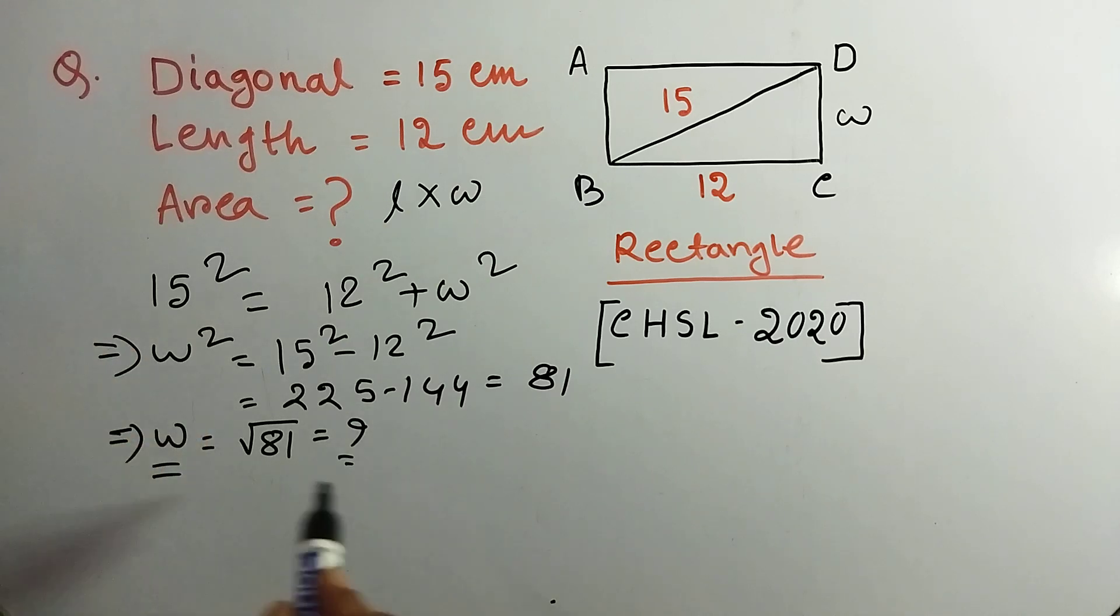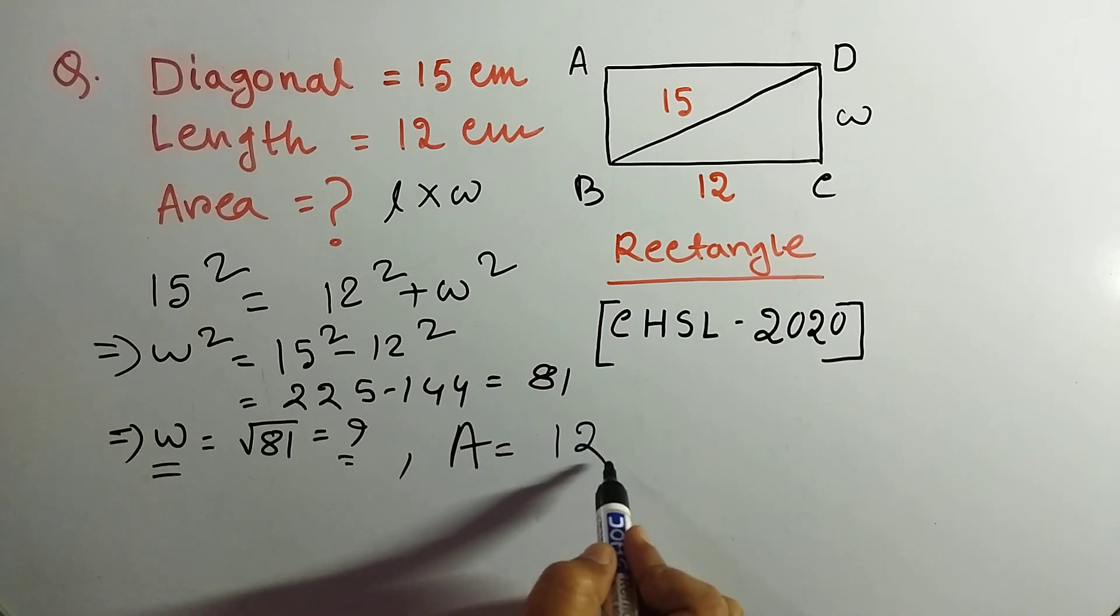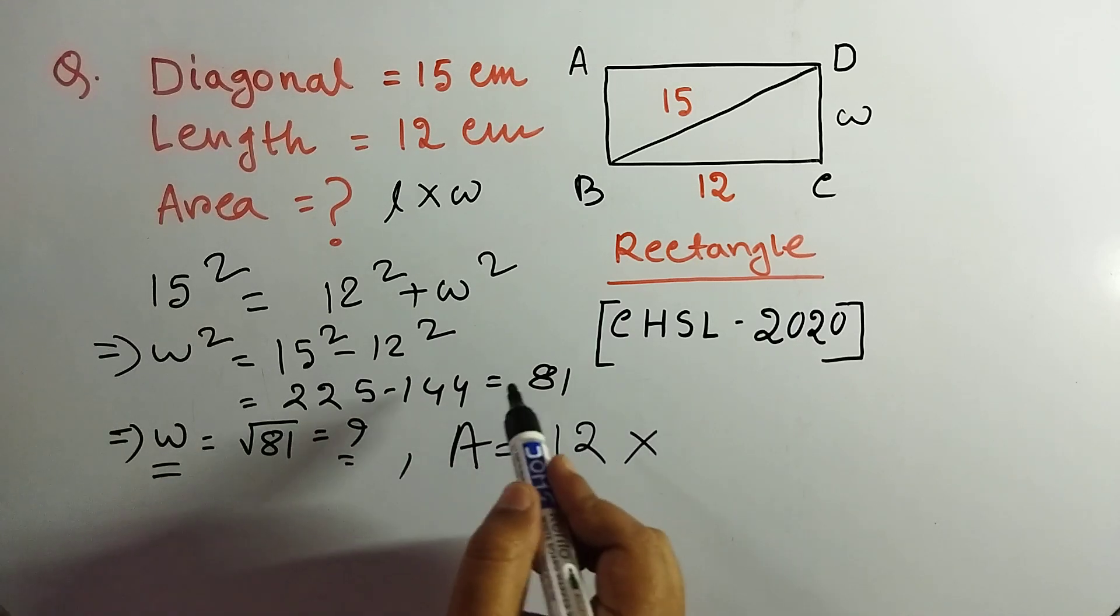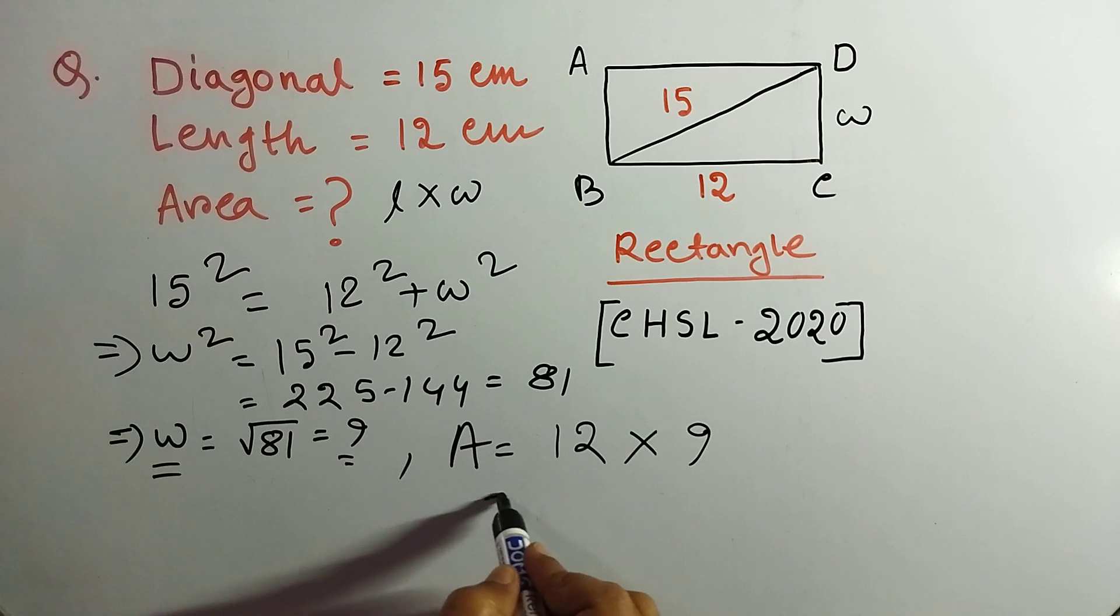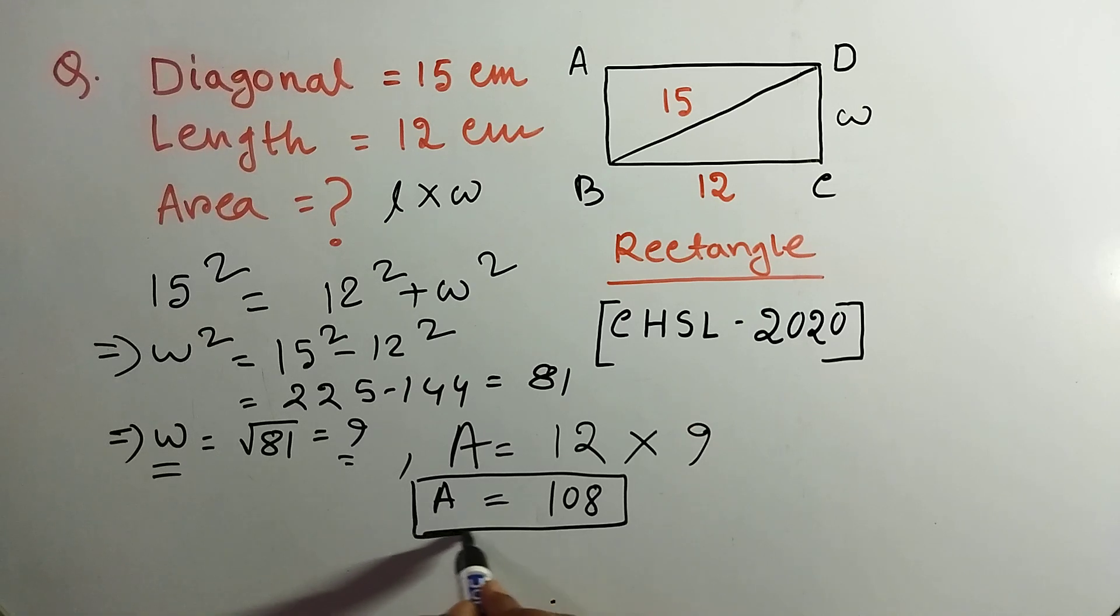Then what is the formula for area? Formula for area is length, length is 12, multiplied by width, width is 9. So 108, this is the area value.